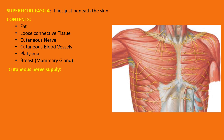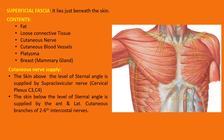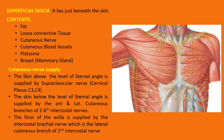Now the sternal angle — it is made up of three parts: above we have the manubrium, in between we have the body of the sternum, and just below the sternum we have the xiphoid process. The articulation between the manubrium and the sternum is called the sternal angle, which is a clinically important landmark. The skin above the sternal angle is supplied by the supraclavicular nerve, while the skin below the sternal angle is supplied by the anterior and lateral cutaneous branches of the second to sixth intercostal nerves. The floor of the axilla is supplied by the intercostal brachial nerve, which is the lateral cutaneous branch of the second intercostal nerve.